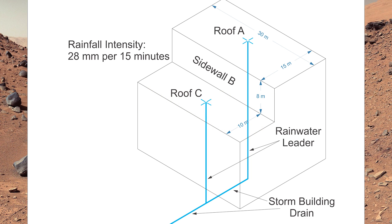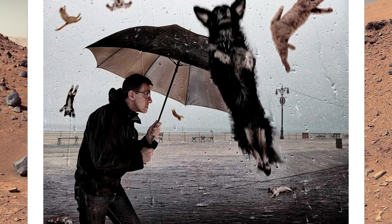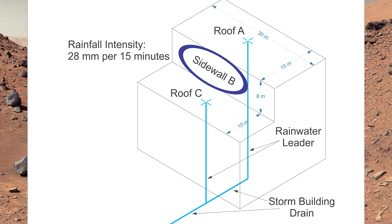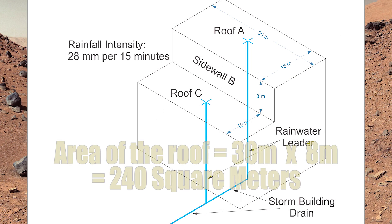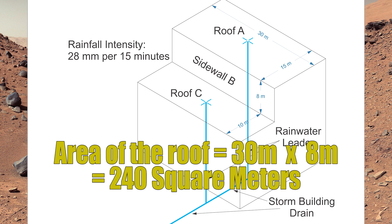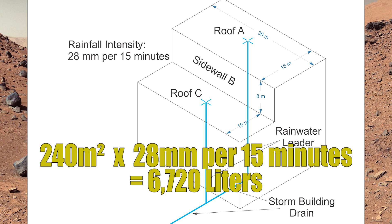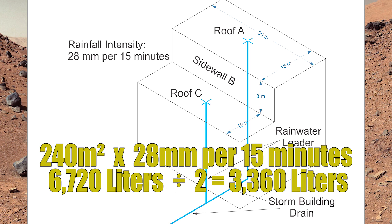But that's not all that's going to drain down that roof drain — we also have a sidewall. During a torrential downpour, rain tends to come in sideways, so we're going to get water bouncing off that sidewall. As directed by section 2.4.10.4 of the plumbing code, when we have a sidewall for a roof drain, we take 50 percent of the liters we would typically calculate. The sidewall is 8 meters by 30 meters, which is 240 square meters, times 28 millimeters, equaling 6,720 liters. Taking 50 percent of that gives us 3,360 liters.